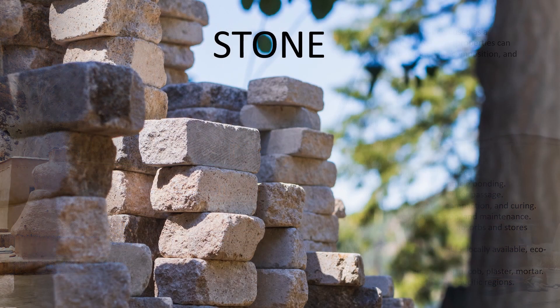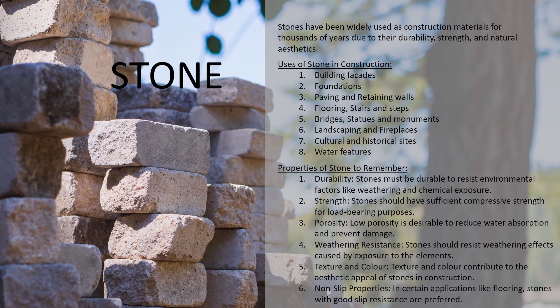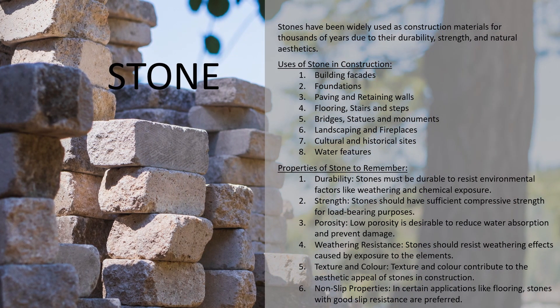Now let's discuss about the material stone. Stone has been widely used as a construction material for thousands of years due to its durability, strength and natural aesthetics. The uses of stone in construction include building facades, foundations, paving and retaining walls, flooring, stairs and steps. It has also been used in bridges, statues, monuments, landscaping, fireplaces, cultural and historical sites and water features.